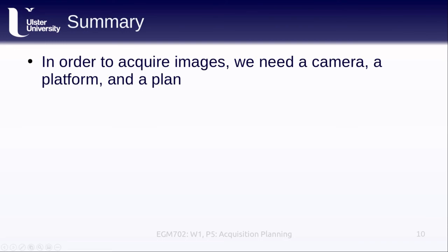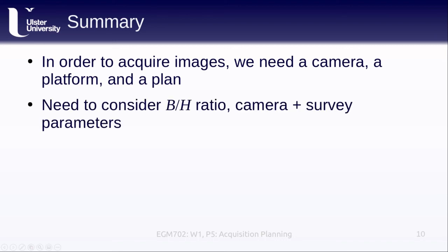In summary, in order to acquire images, we need a camera, a platform, and a plan. We need to consider the ratio of the distance between images divided by the height of our flight. We also need to think about the camera and survey parameters, and also consider the purpose of the survey. Thinking about what it is that we're trying to do, all of that is going to help us figure out the plan for acquiring our images. And again, specialized software will help do most of the planning, but at least the purpose of the survey is something that you will have to do yourself.